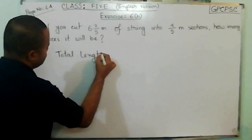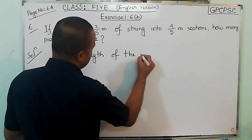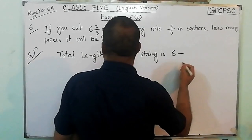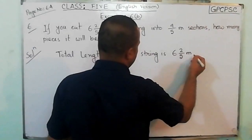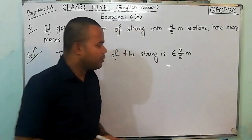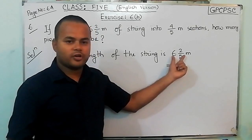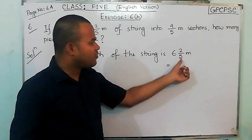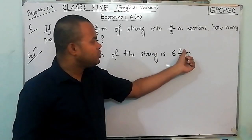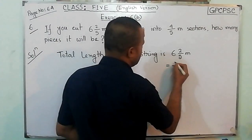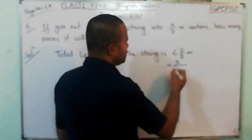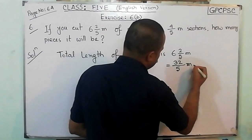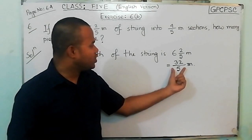So the total length of the string is 6 whole 2 by 5 meter. We have to convert this into an improper fraction. If we convert this, then we have 6 times 5, that is 30, then add 2 with 30, that is 32. So we put 32 as the numerator, divided by 5 as the denominator, that is meter. So the total length of the string is 32 by 5 meter.